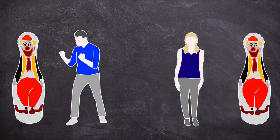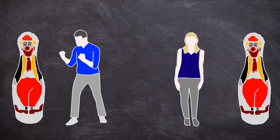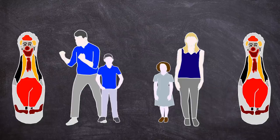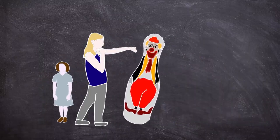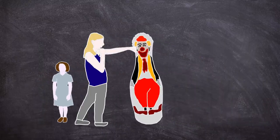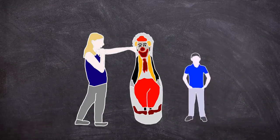Half the experimental subjects would be exposed to aggressive models and half were exposed to models that were subdued and non-aggressive in their behaviour. These groups were further divided into male and female. Half the subjects that experienced the aggressive and non-aggressive models had same-sex models whereas the others had an opposite-sex model.